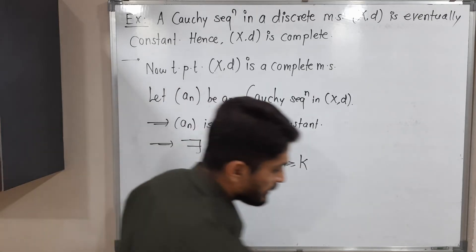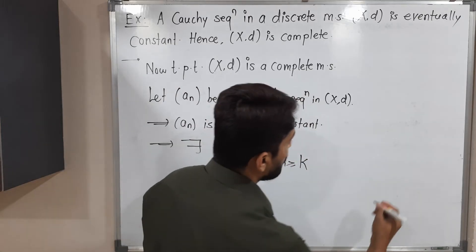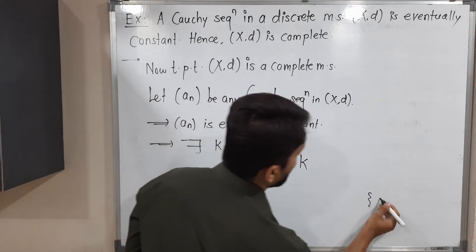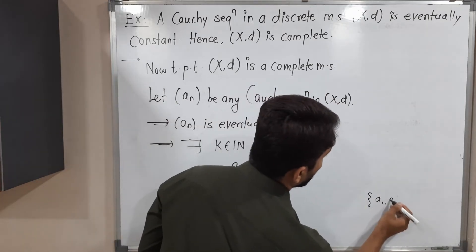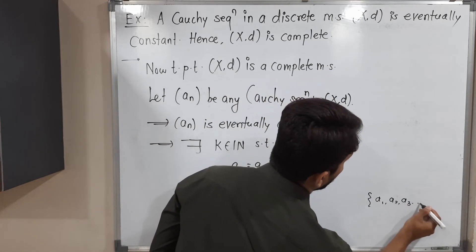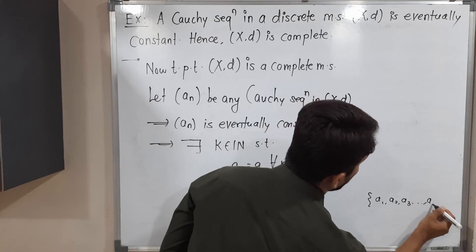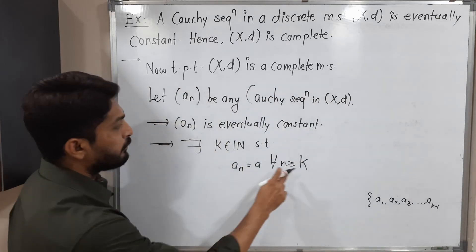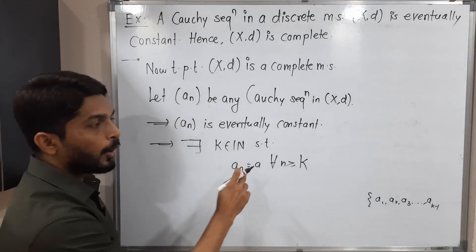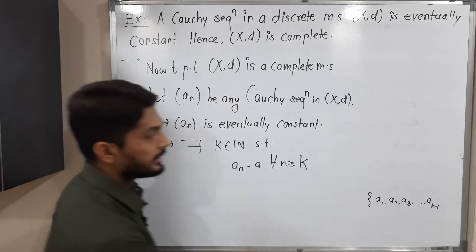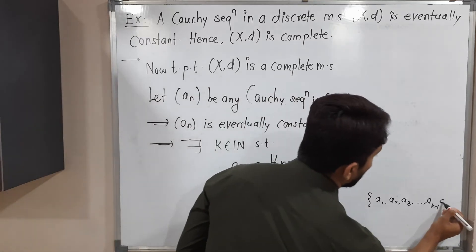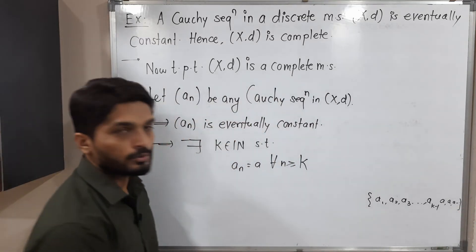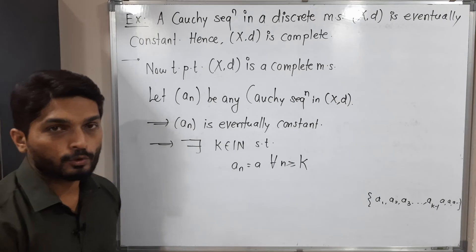That means the sequence a_n looks like: a_1, a_2, a_3, and so on up to a_{k−1}, but from the k-th term onward all terms are a, a, a, a... So this is eventually constant.